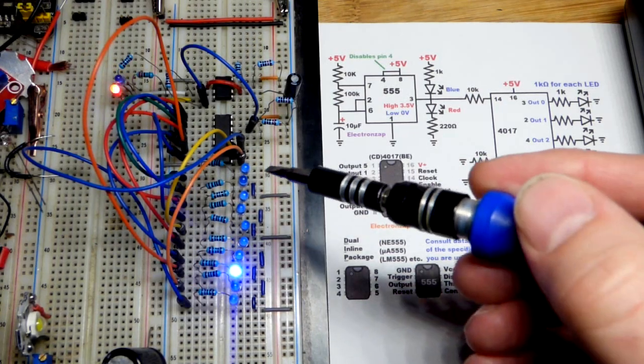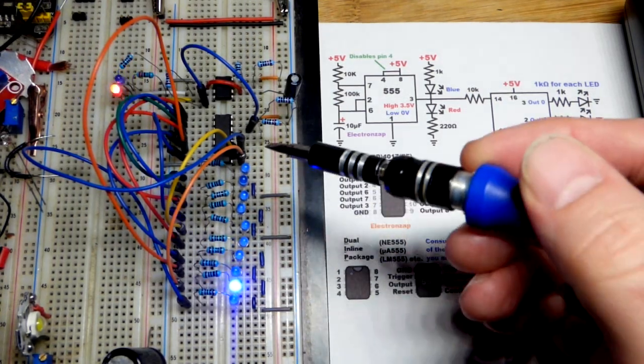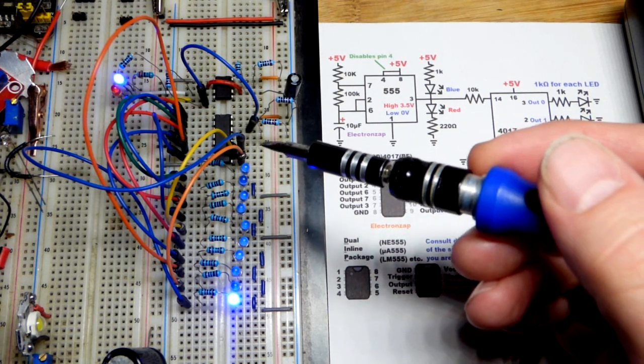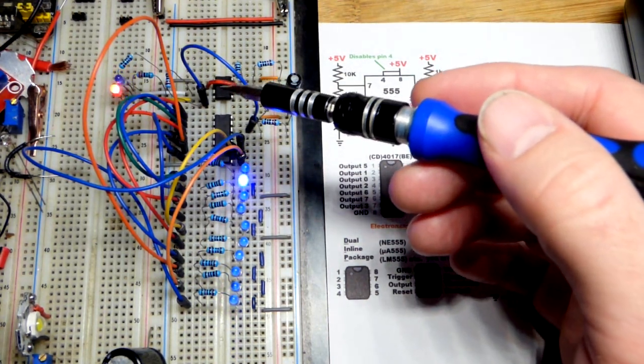So now in this video we're going to look at an LED chaser here. We're using the 4017, which is being clocked with the 555 timer right there.